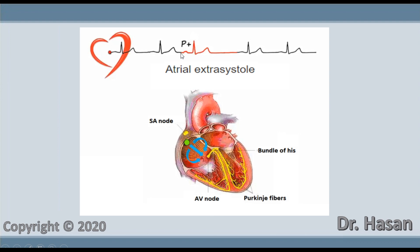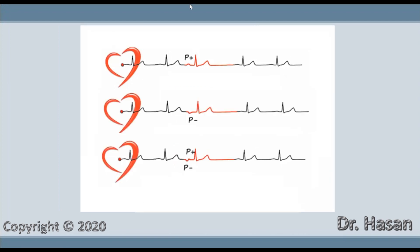Let's summarize the criteria for atrial extrasystole. The RR distance before the extrasystole is less than the RR distance between normal contractions. We can see a positive, negative, or biphasic P wave which is different from other P waves. The QRS complex is not changed.